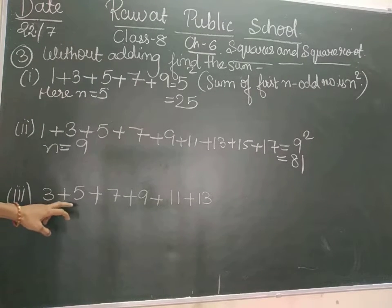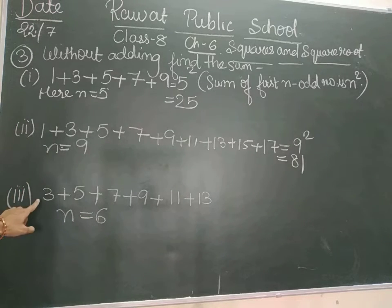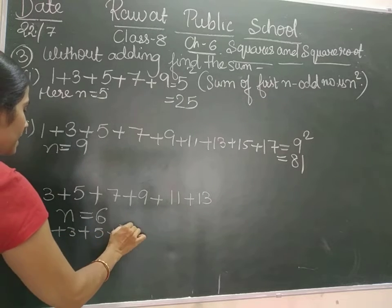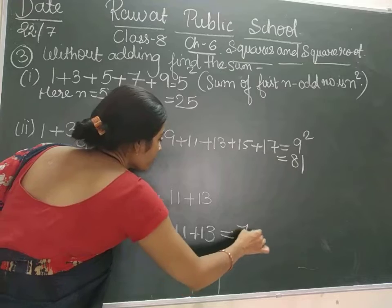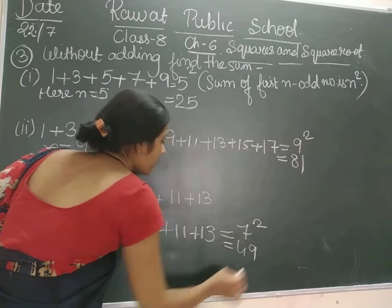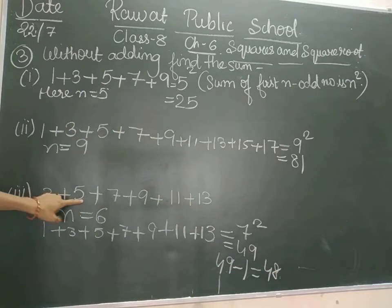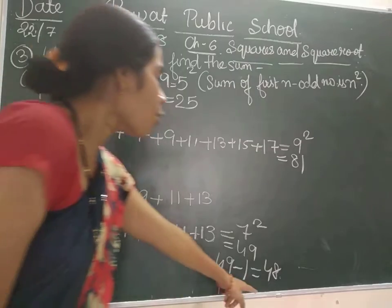Now for 3 + 5 + 7 + 9 + 11 + 13, n is 6 but it is not starting from 1 — 1 number is missing. So what we will do: take 1 + 3 + 5 + 7 + 9 + 11 + 13 = 7² = 49, and then minus 1. It will be 48. So for 3 + 5 + 7 + 9 + 11 + 13 where n was 6, the answer is 48.